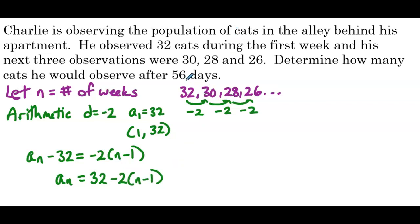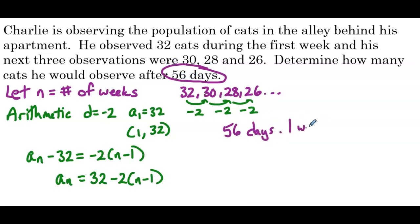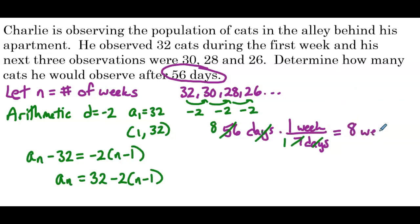We want to determine how many cats he would observe after 56 days, but n is in weeks. So first we need to convert 56 days to weeks. Using dimensional analysis: 56 days times 1 week per 7 days — the days cross out, 7 and 56 simplify to give us 8. So 56 days is 8 weeks.